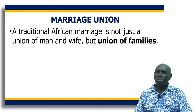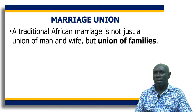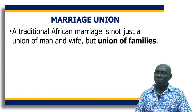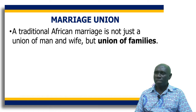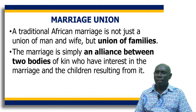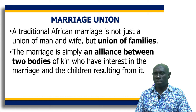After the payment of the bride wealth, there is marriage union — the union of the man and the wife. This is actually a sexual union, but it is also seen as a union of families. The union of the man and the wife also involves the union of their respective families. In the traditional society, it is basically an alliance between the two bodies — the families of the couple who have declared their interests in the marriage and the children that may result from it.